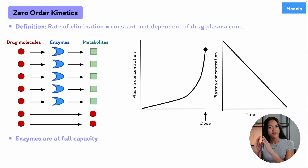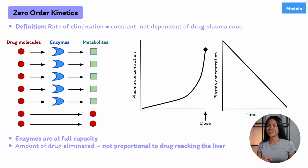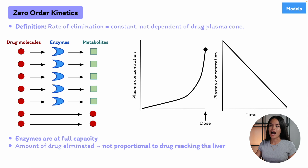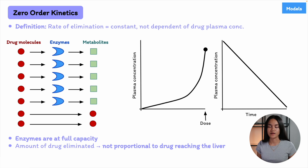Once the enzymes are saturated, they can only eliminate the drug at a constant rate, regardless of the concentration of the drug. This results in zero-order kinetics, where the drug is eliminated at a fixed rate — not proportional to concentration as in first-order kinetics. No matter how much drug is in the system, the body can only clear it at this fixed rate until the concentration decreases enough for the enzymes to operate more efficiently again. That results in a linear decay of the drug plasma concentration over time.